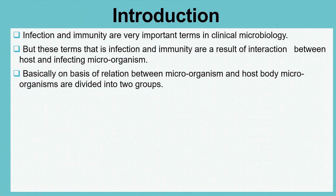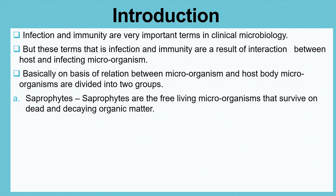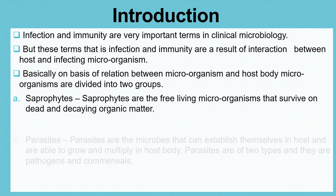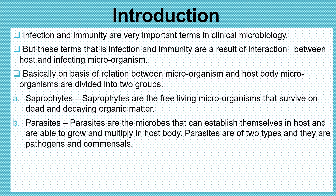On the basis of the relationship between microorganism and host body, that is the types of interactions that take place between a microorganism and a host body, microorganisms are divided into two groups. The first group is saprophytes. Saprophytes are the free-living microorganisms that survive on dead and decaying organic matter. The second group is parasites — the microbes that can establish themselves in a host and are able to grow and multiply in the host body.